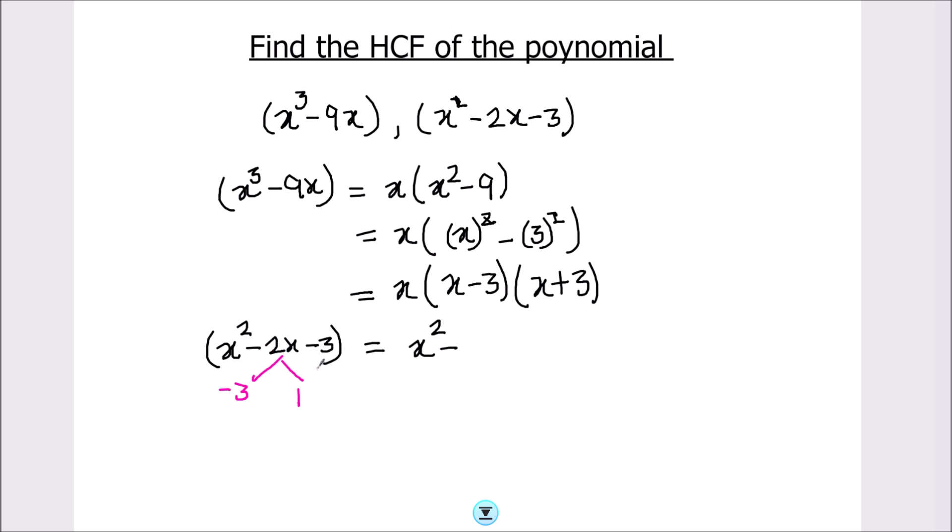-3 and +1 will give us -2 for their sum and their product will be equal to -3. So now we can factor this as x² - 3x + x - 3.